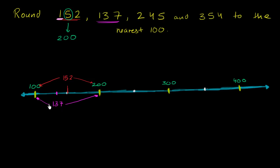137 is clearly closer to 100. Or we could apply our rule: if we're rounding to the nearest 100, we look at the tens place. If the tens digit is 5 or larger, we round up; if it's less than 5, we round down. In this case, the tens digit is 3, so we round down to 100.